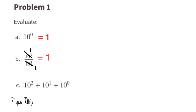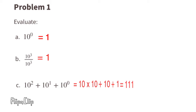C: 10 squared plus 10 to the power of 1 plus 10 to the power of 0. That's the same as 10 times 10 plus 10 plus 1, which equals 111.